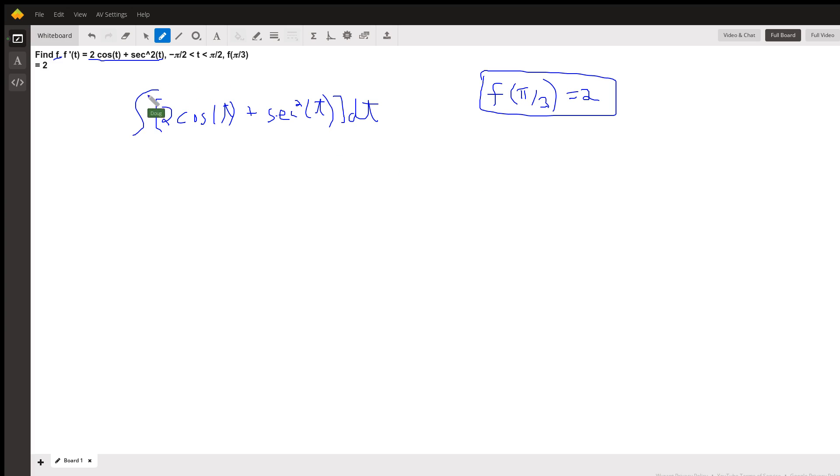If we find an antiderivative for this function, this condition will allow us to evaluate C. So the antiderivative for 2 cosine of t is 2 sine of t, because the derivative of the sine of t is cosine of t. The antiderivative for secant squared is tangent of t plus C.